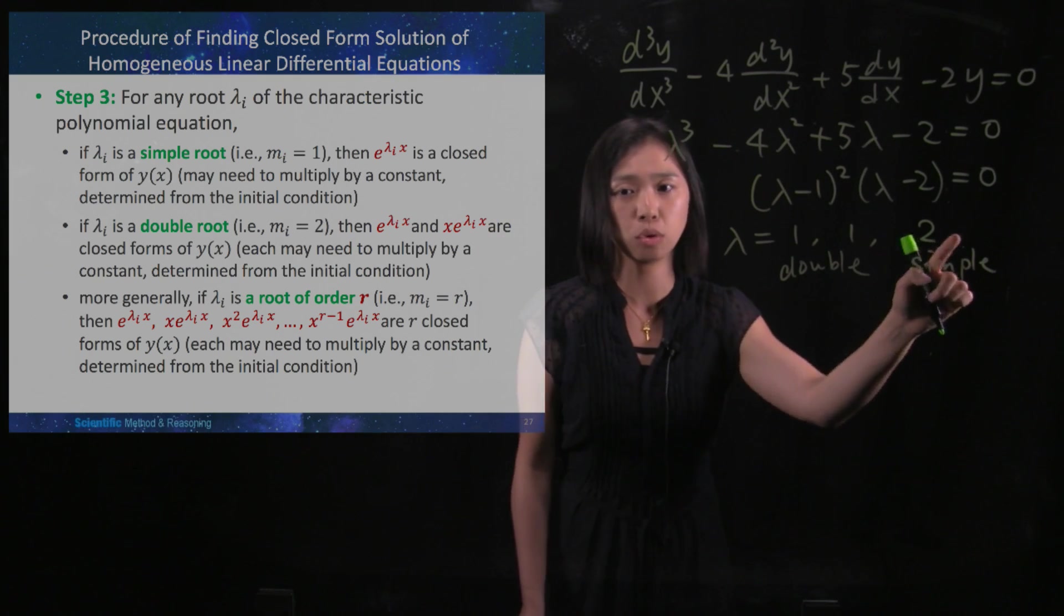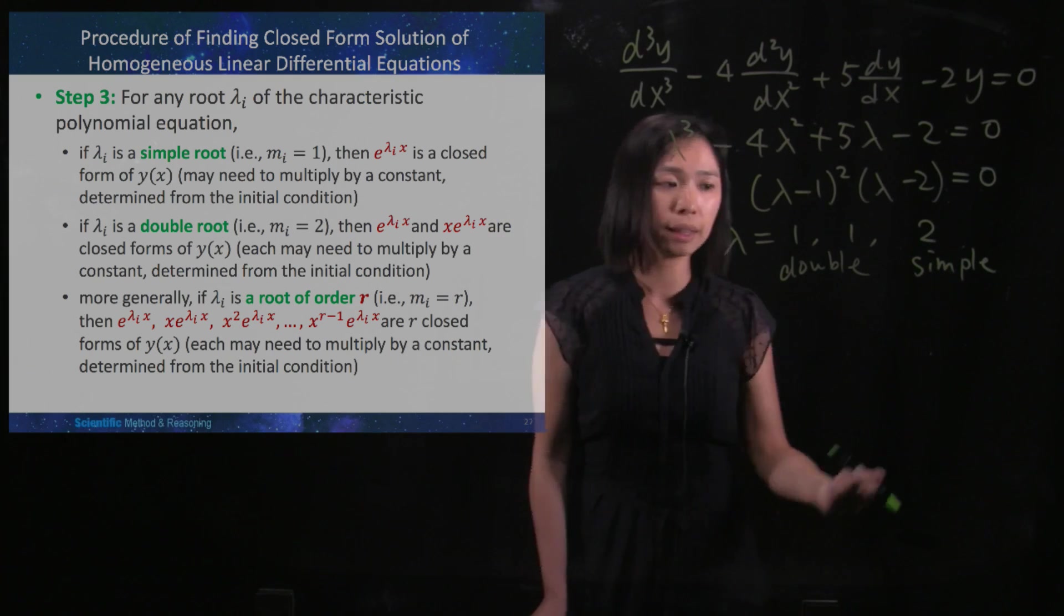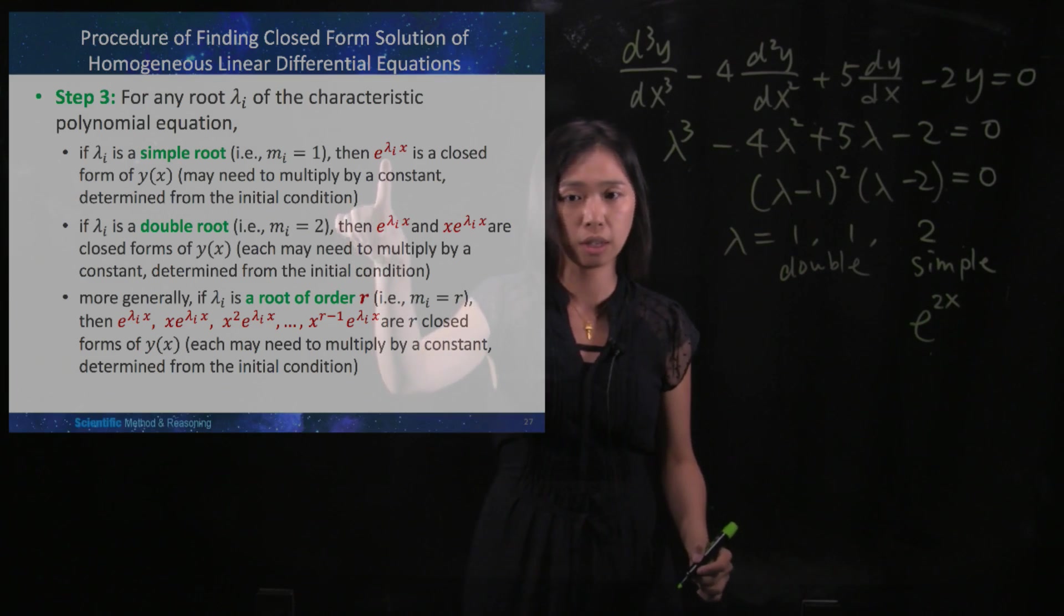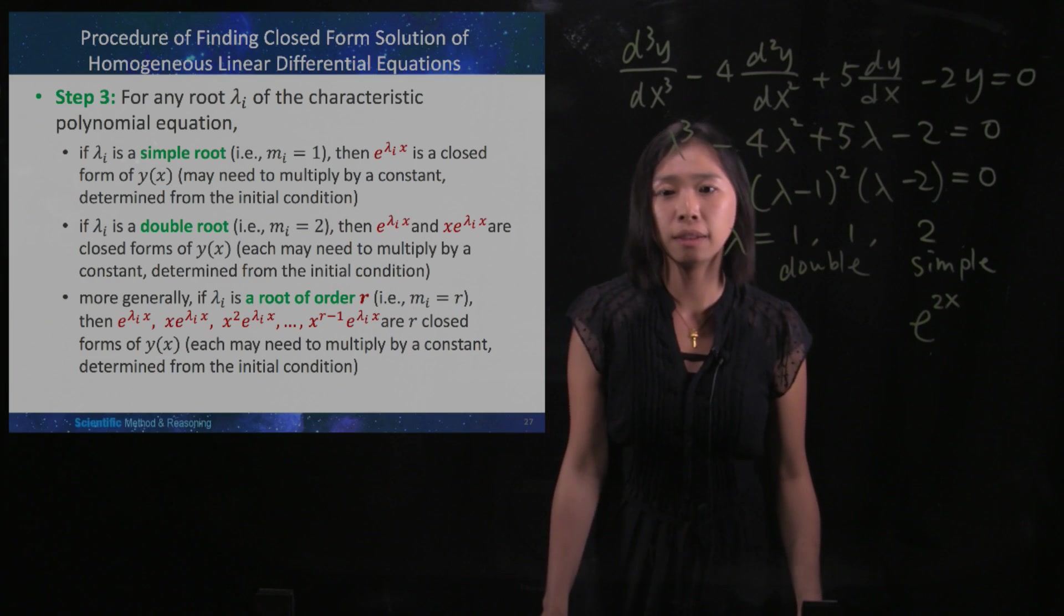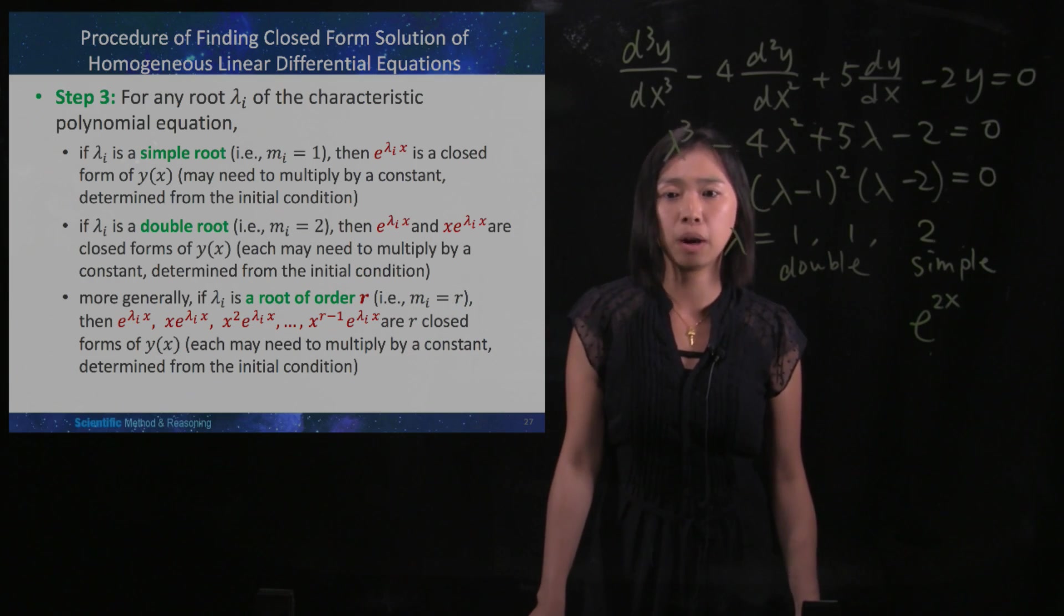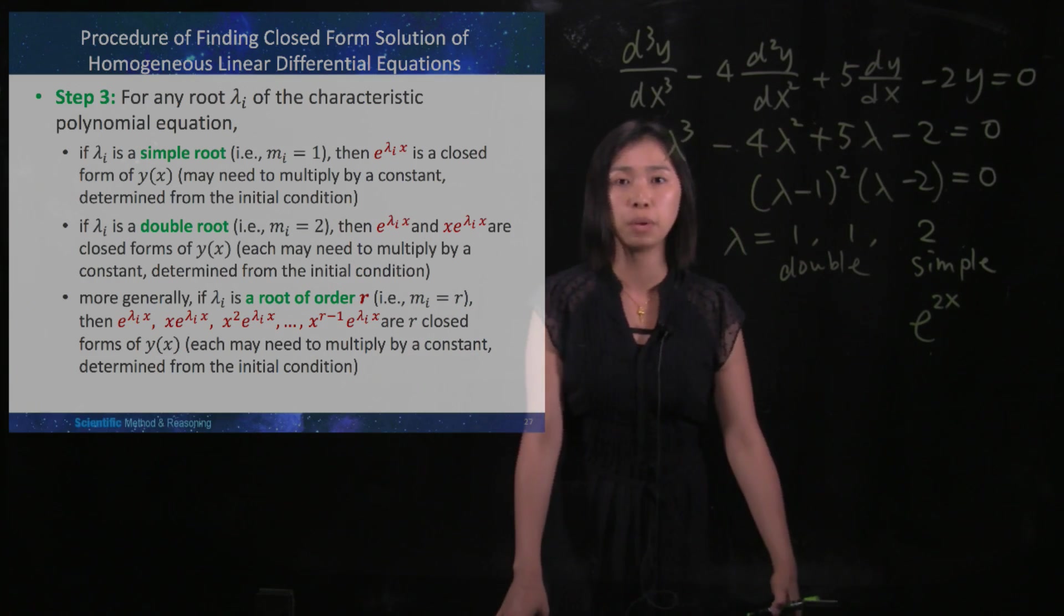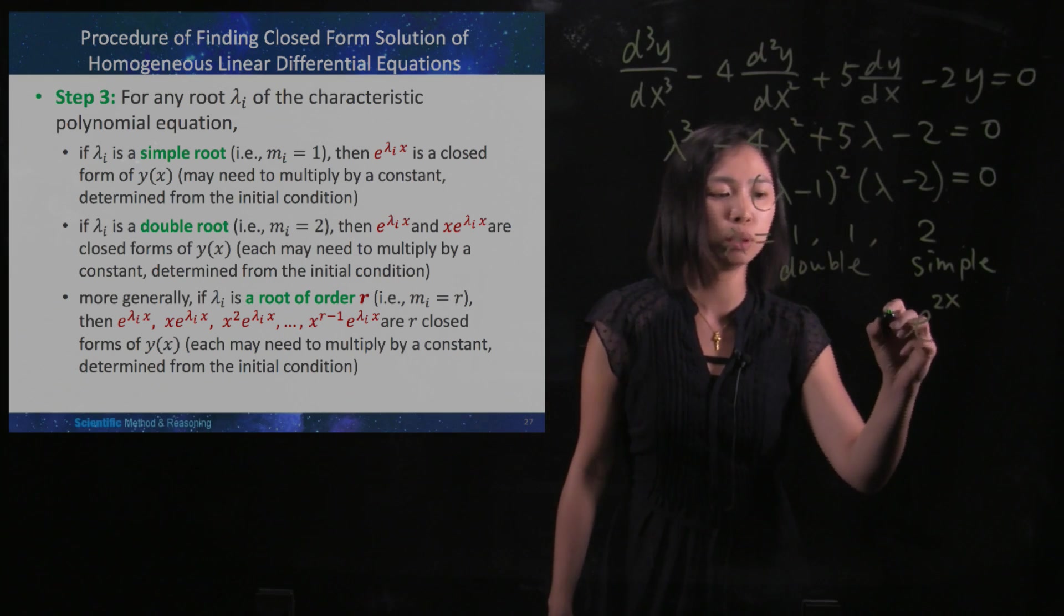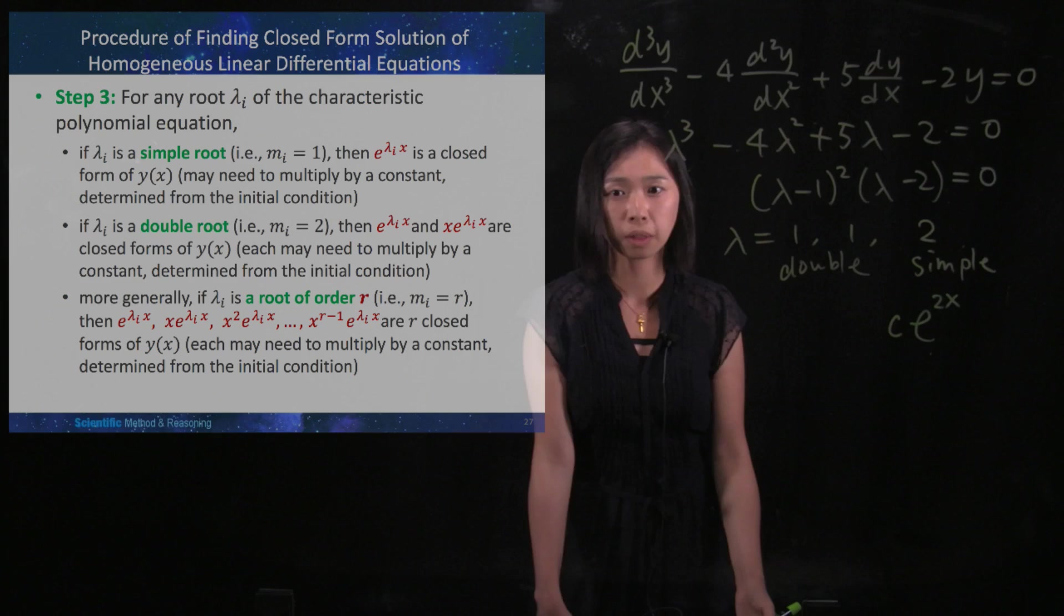Referring to the first bullet point here, if λ, that means that 2 is a simple root, then I would have e^(2x) because this λ is 2. We may need to multiply by a constant, and this constant can be determined by the initial conditions if we are given in the questions. So maybe I multiplied it by a constant c.